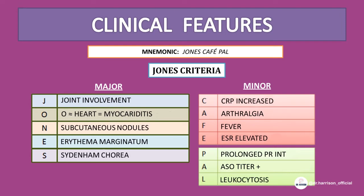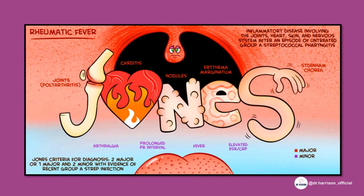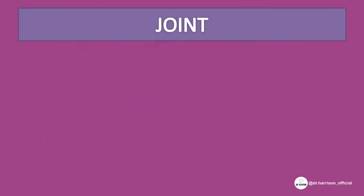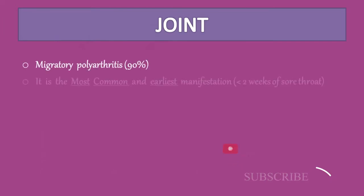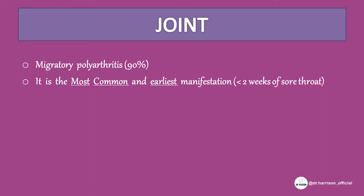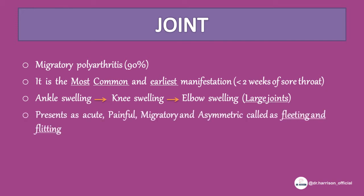Joint involvement: the most common and earliest manifestation, presenting within two weeks of sore throat. It begins with ankle swelling, followed by knee swelling, then elbow swelling. Mainly large joints are involved. It presents as acute, painful, migratory, asymmetric arthritis — called 'fleeting' arthritis.